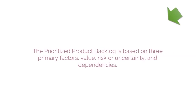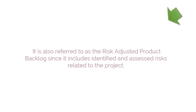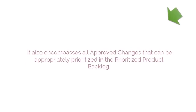The Prioritized Product Backlog is based on three primary factors: value, risk or uncertainty, and dependencies. It is also referred to as the Risk Adjusted Product Backlog, since it includes identified and assessed risks related to the project. It also encompasses all approved changes that can be appropriately prioritized in the Prioritized Product Backlog.